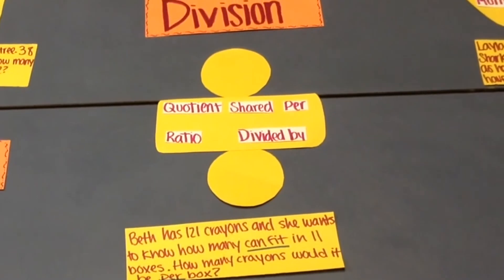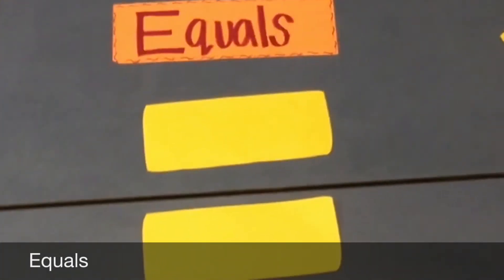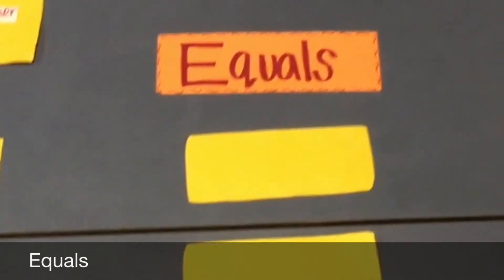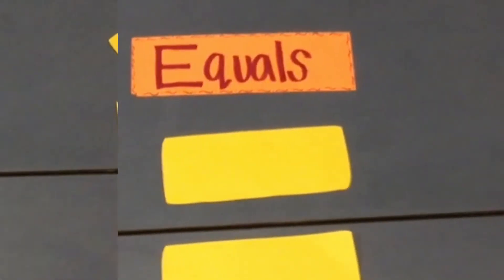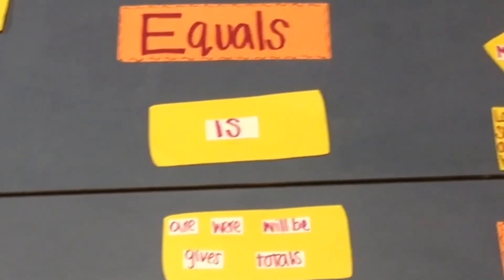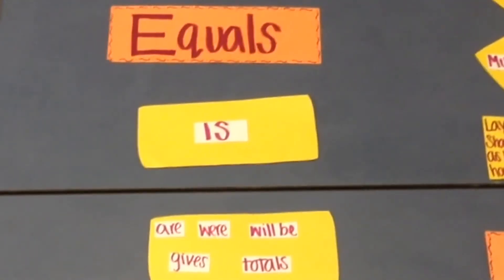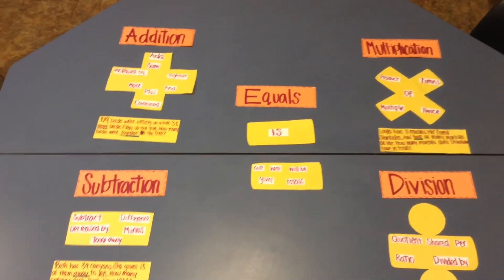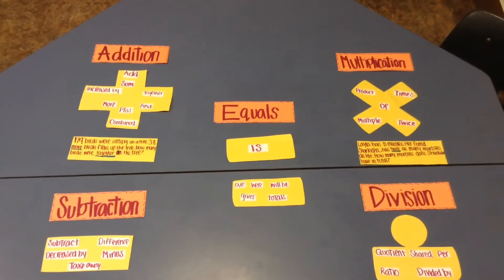For equals, those two pieces of yellow papers put together in the middle are the representation of the symbol of equality. The keywords for equalities are is, are, were, gives, will be, and totals. And for this one, we don't have an example because equals is basically the outcome of every word problem.